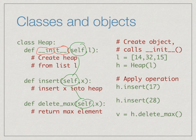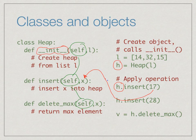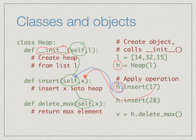The parameter need not be called self but it is less confusing to always call it self. Self is a name used inside the class to refer to the object that we are currently looking at. For instance, if we are dealing with heap h and we say h dot insert, then h is the value on which 17 should be added — that is the name for self.